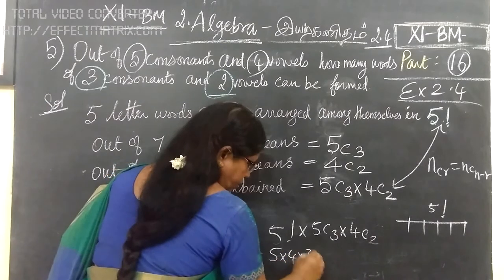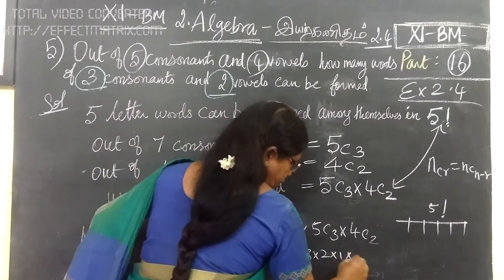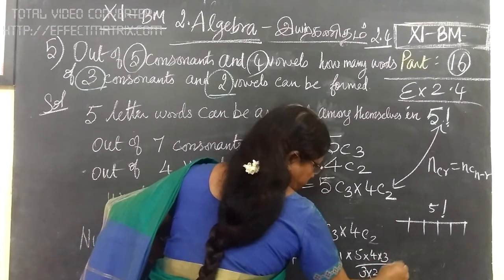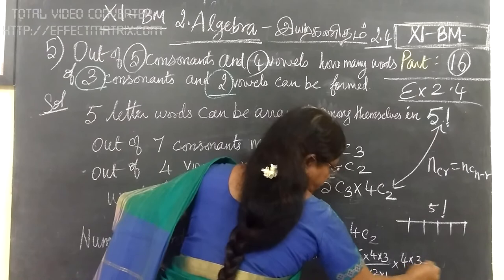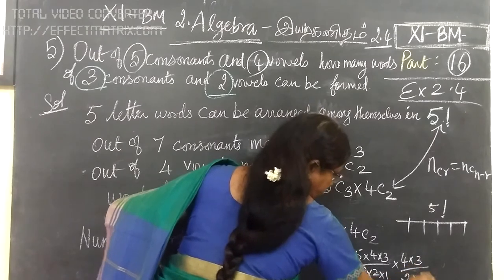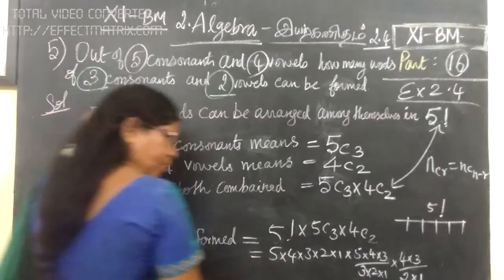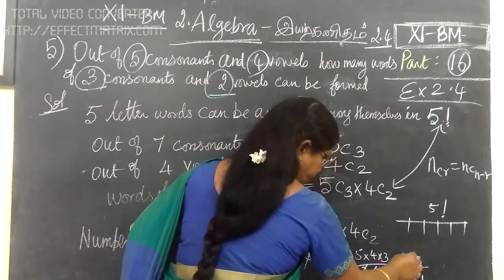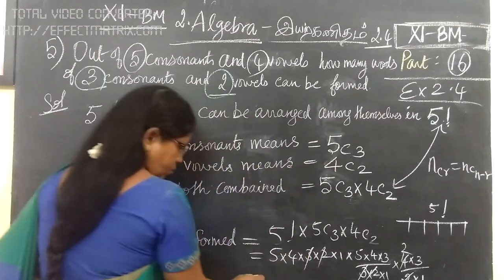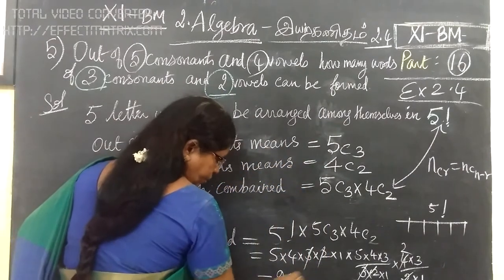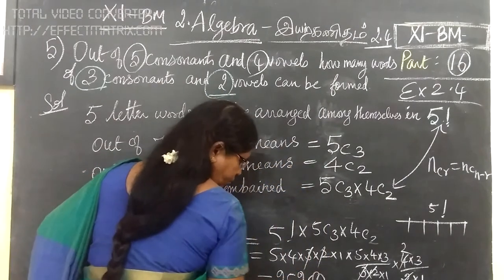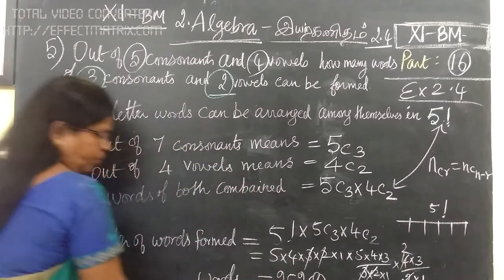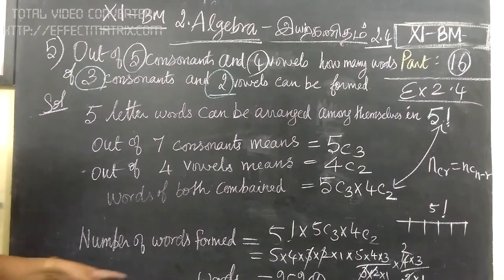So, 5 into 4 into 3 into 2 into 1. Now, 5 into 4 into 3 divided by 3 into 2 into 1. Now, 4 into 3 divided by 2 into 1. So, the total number of words to be formed equals 1200.